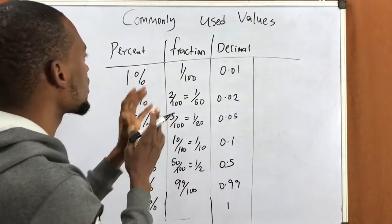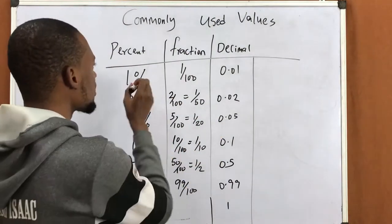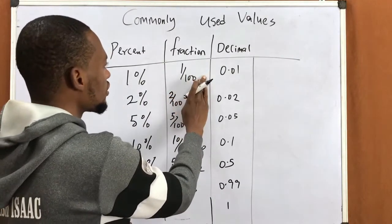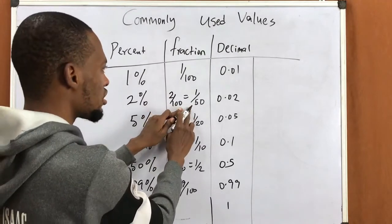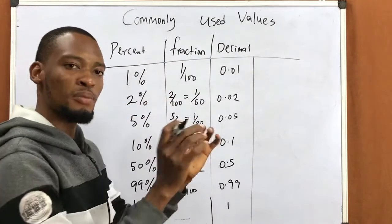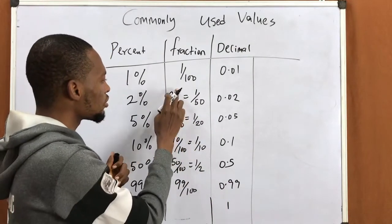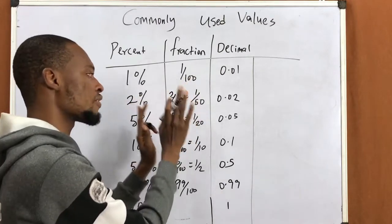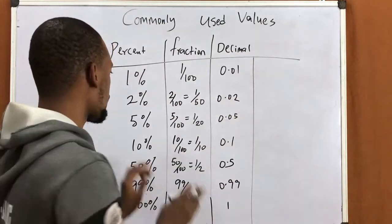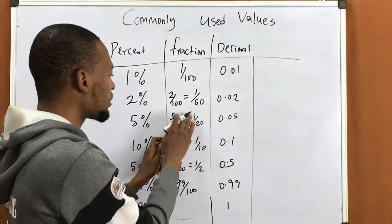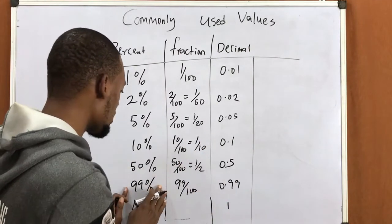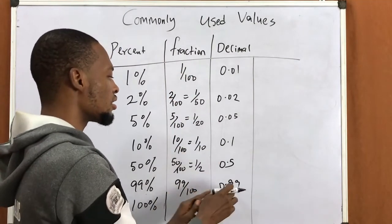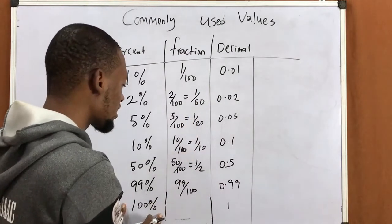Now let's look at commonly used values in percent, fraction, and decimal. 1% is 1 over 100 as a fraction, and 0.01 as a decimal. 2% is 2 over 100, which simplifies to 1 over 50, and is 0.02 as a decimal. 5% is 5 over 100, which simplifies to 1 over 20, and is 0.05 as a decimal. 99% is 99 over 100 as a fraction, and 0.99 as a decimal.